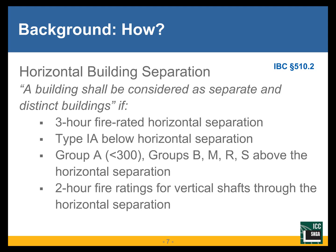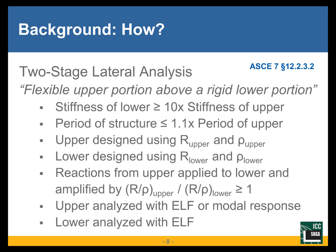Any penetrations through that slab — for stairs, elevators, ramps, mechanical shafts, and similar elements — need to have a two-hour fire rating. The second code allowance is from ASCE 7, the structural provision that allows a two-stage lateral analysis, designing the upper and lower portions separately, as long as the stiffness of the upper wood portion is not more than ten times the stiffness of the lower portion.